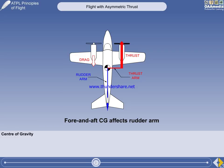The aircraft rotates around its CG, but its fore and aft position has no effect on the yawing moment from a failed engine. The rudder arm is affected, however — with an aft CG giving the worst case with the least rudder effectiveness.